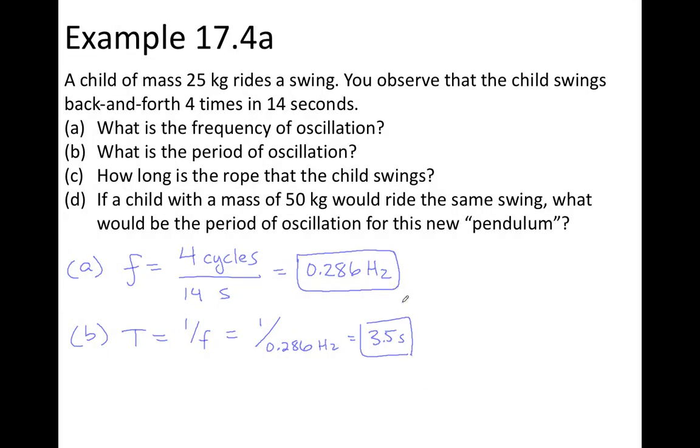For part C, we want to know the length of the rope. And so we can use the period of a pendulum formula, where the period is 2π times the square root of the length over g. And I know the values of g, which is 10, and I know the value of the period. I just worked that out. And so we can solve this for the length. Now, the first step in the algebra, since length is underneath the square root, the first step is going to be to square everything.